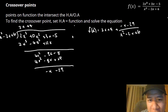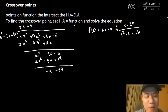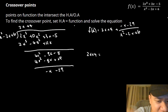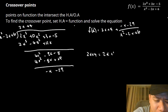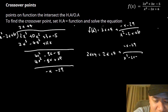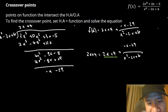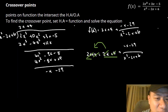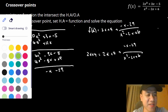Same process: to find the crossover point, we set our oblique asymptote equal to our function in remainder form. So we set 2x + 4 equal to (2x + 4) + (−x − 29) / (x² − 2x + 6). If we move 2x to the other side, the 2x terms cancel out. The 4s cancel out too. So we're left with 0 = (−x − 29) / (x² − 2x + 6).